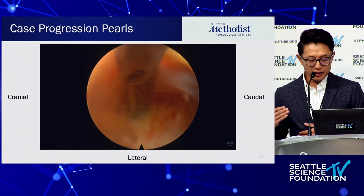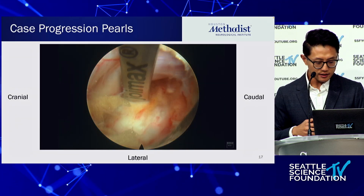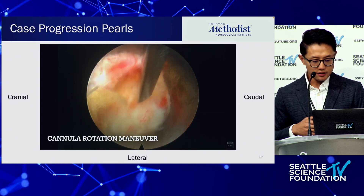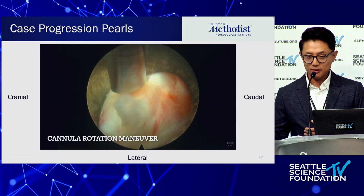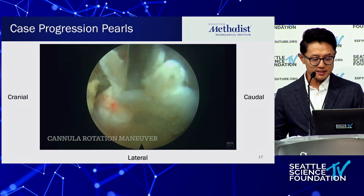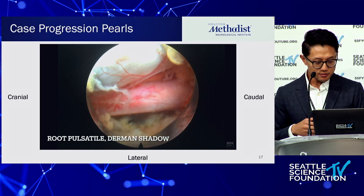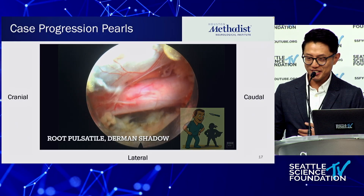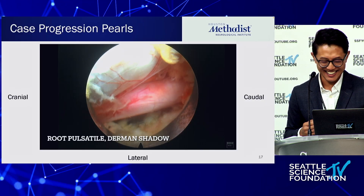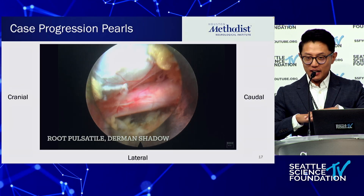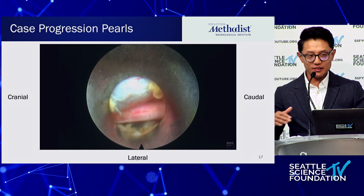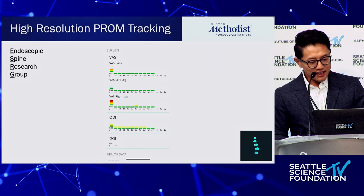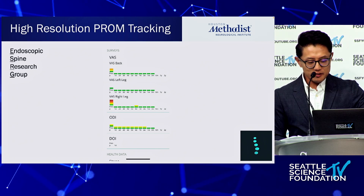Use a blunt ball-tip dissector probe to release those epidural ligaments. Once released, you can perform the cannula rotation maneuver. Leave your dissector there and start to manipulate the cannula — sometimes rotate counterclockwise, sometimes clockwise, whichever way the root wants to move. Once you've got the root decompressed, you'll see the Derman shadow — as Peter described — a shadow underneath the nerve root that's pulsating. That's how you know you're done.